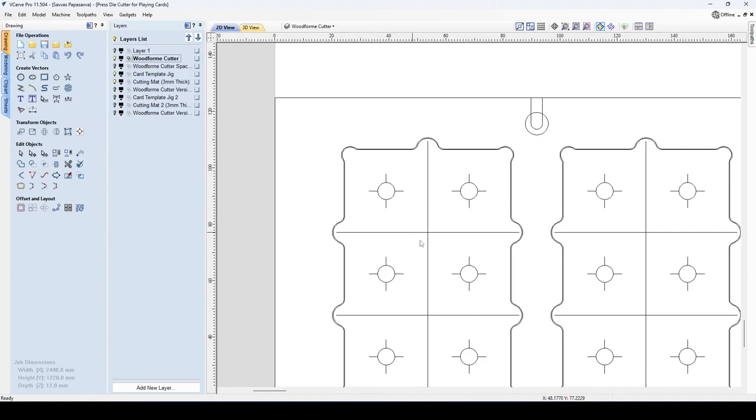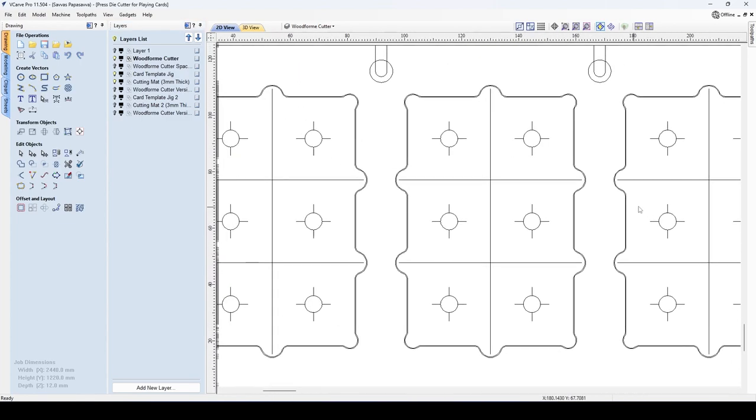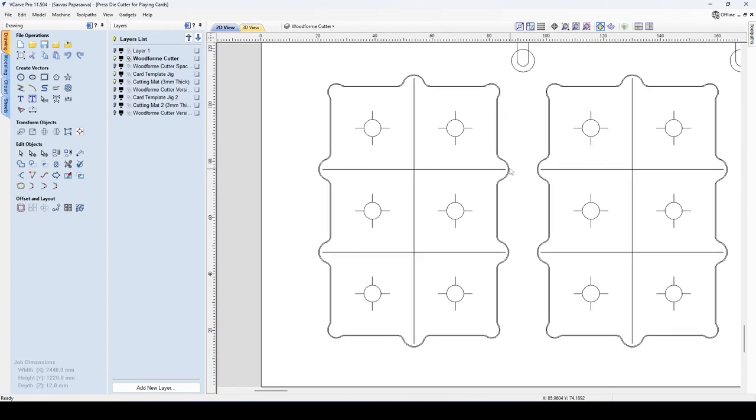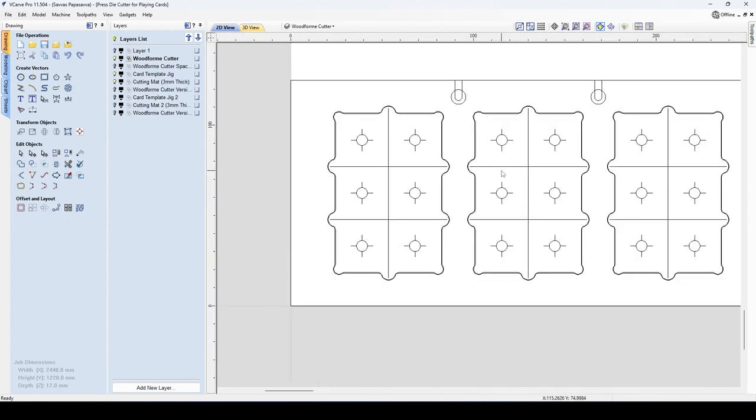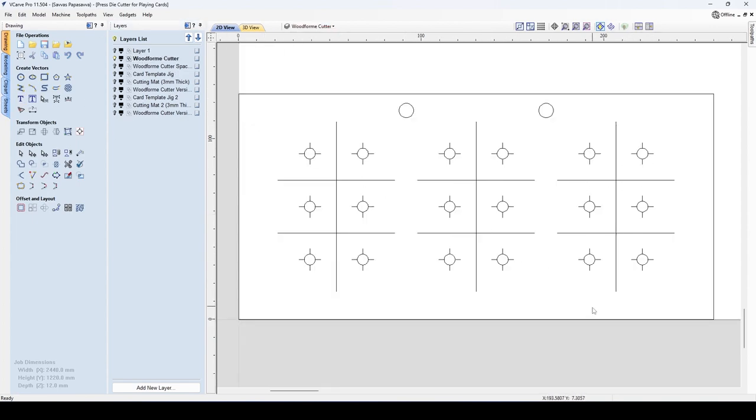This time with the accuracy provided by vector drawings, I designed a former to align all the holes based on the playing card size I'd selected. I drew this up in VCarve Pro, trying to imagine translating the original process for this new old machine.